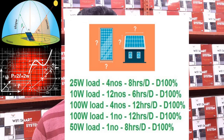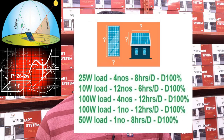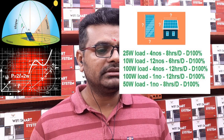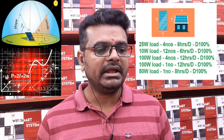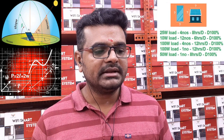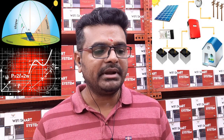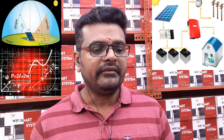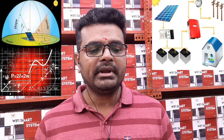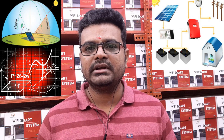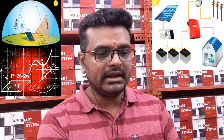Now we will see what kind of loads we have considered. We have considered: 25W load, 4 numbers, 8 hours running per day; 10W load, 12 numbers, 6 hours running per day; 100W load, 4 numbers, 12 hours running per day; 100W load, 1 number, 12 hours running per day; and 50W load, 1 number, 8 hours running per day. All loads are running at 100% duty cycle.